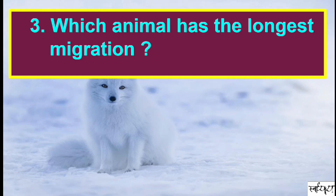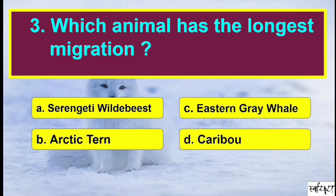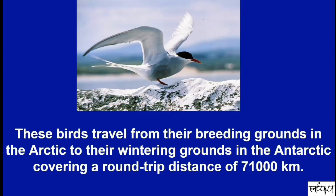Which animal has the longest migration? The answer is Arctic Tern. These birds travel from their breeding grounds in the Arctic to their wintering grounds in the Antarctic, covering a round-trip distance of 71,000 km, which is the longest migration by any animal or bird on the planet. They eat, sleep, and do everything while gliding.